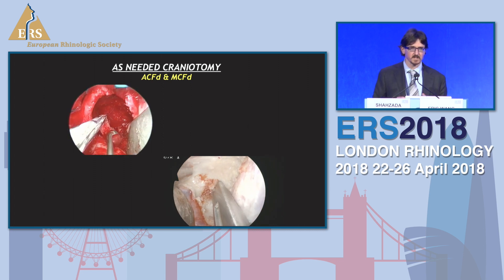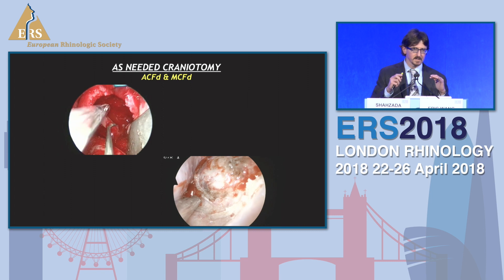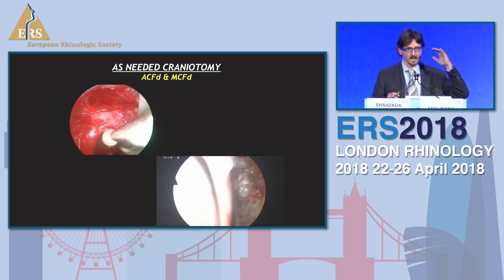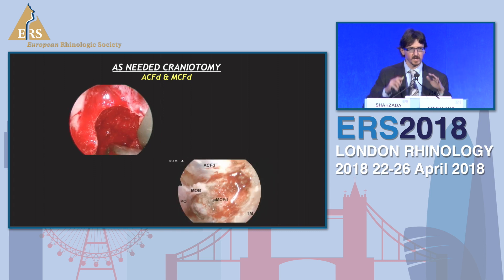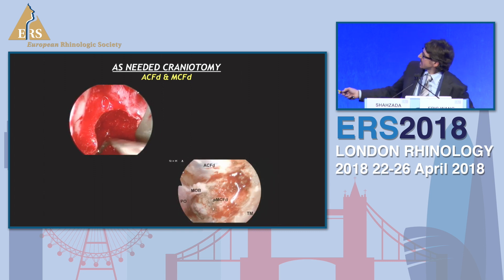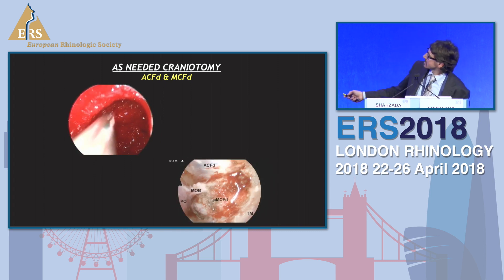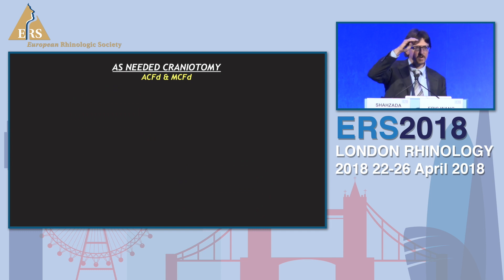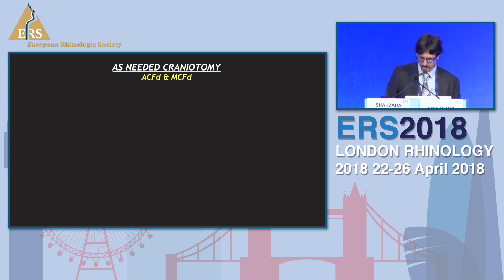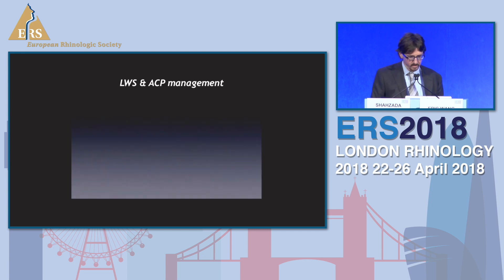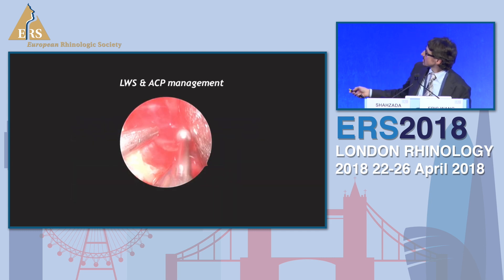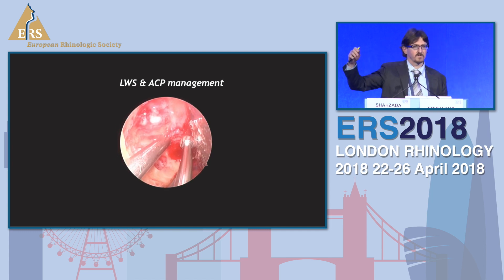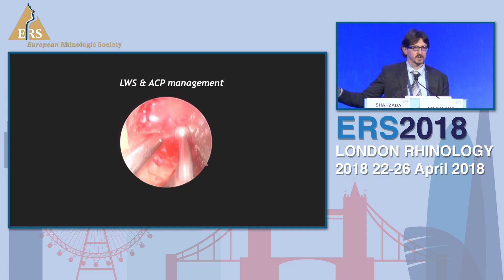Just to keep this easy checklist: orbicularis oculi muscle, superior part of the orbital rim, dissect the periorbita, and then find the superior and inferior orbital fissure. From there, you can move to the anterior cranial fossa, to the middle cranial fossa, and if needed, going even above — though this depends on the pathology.